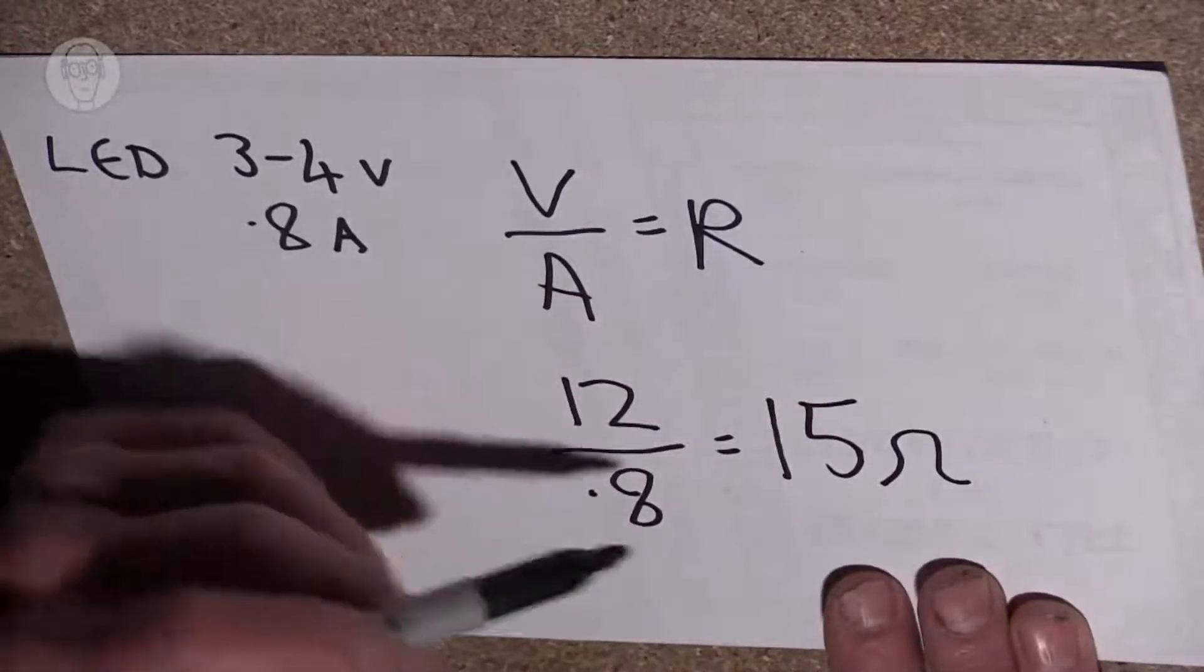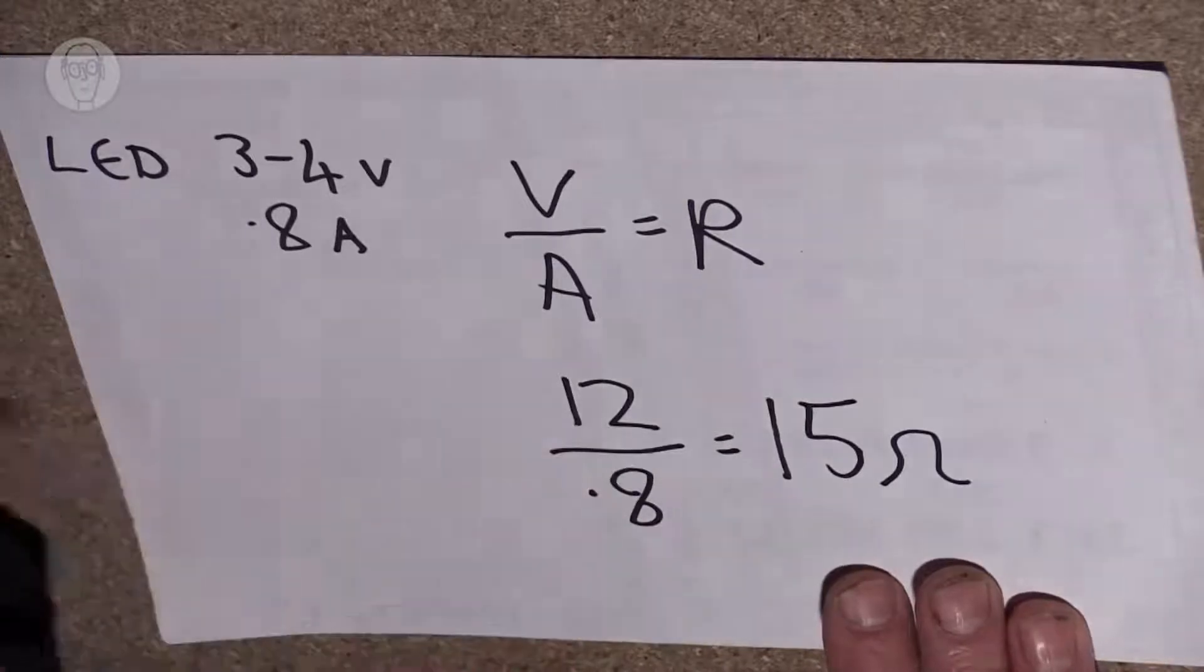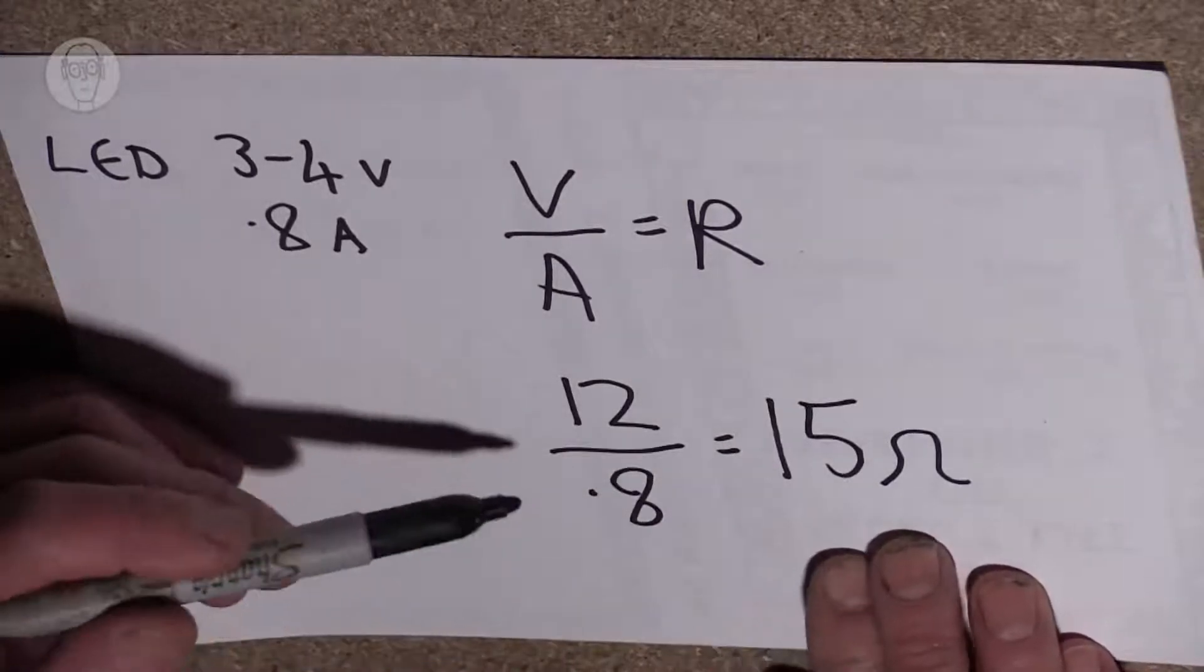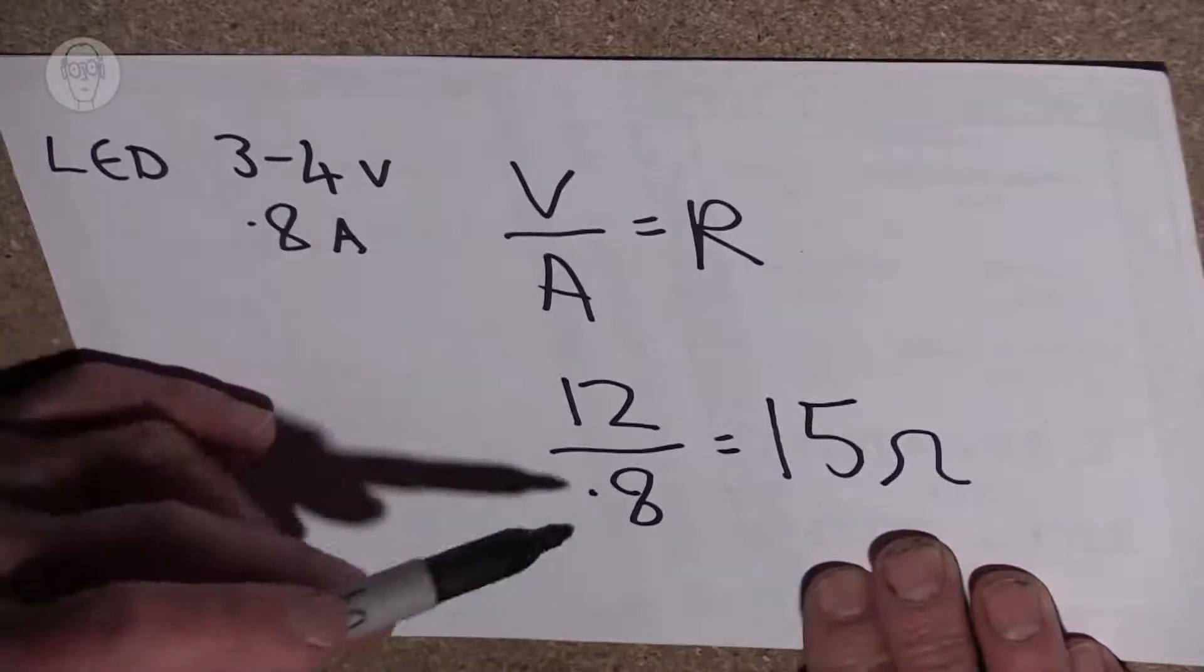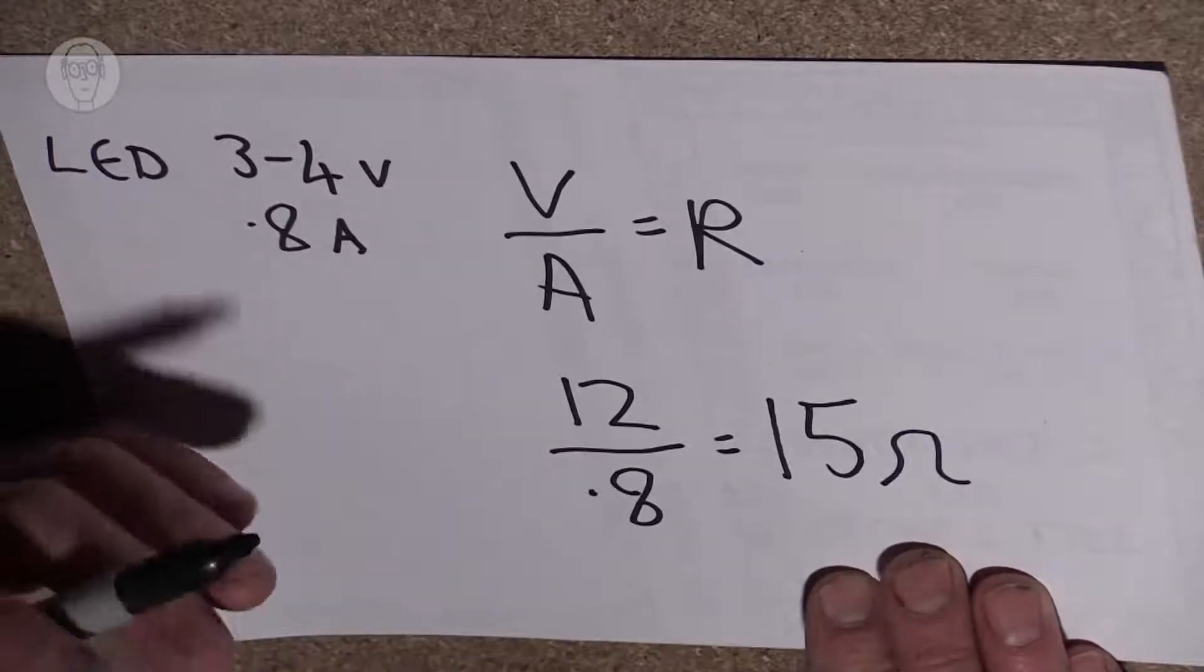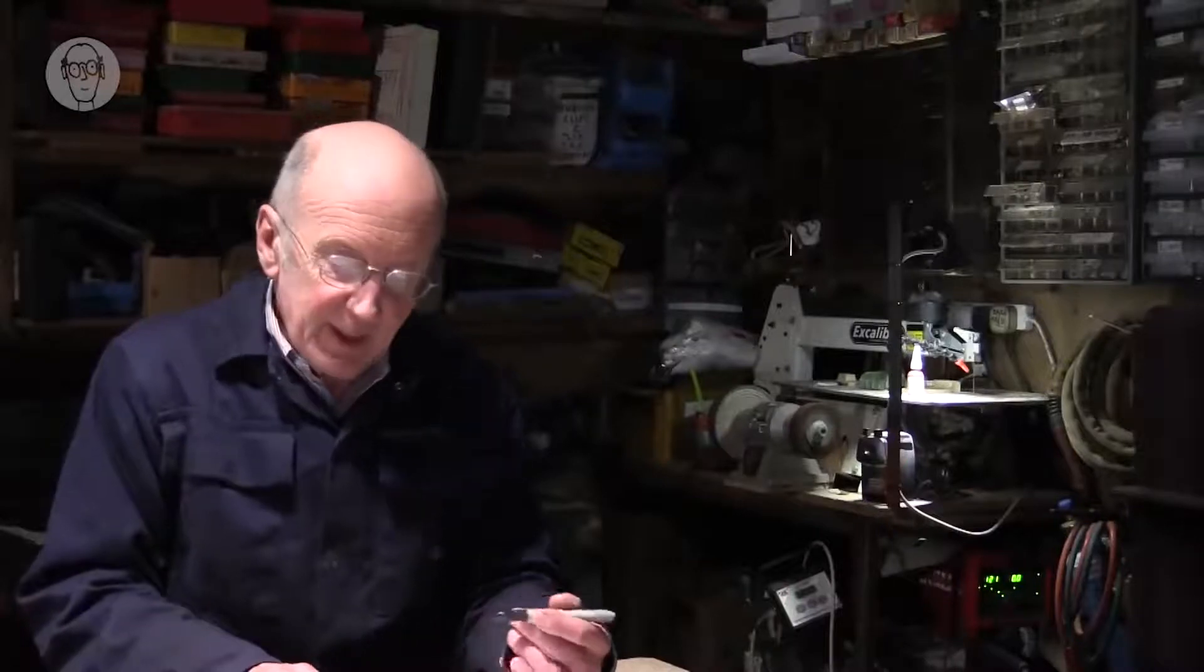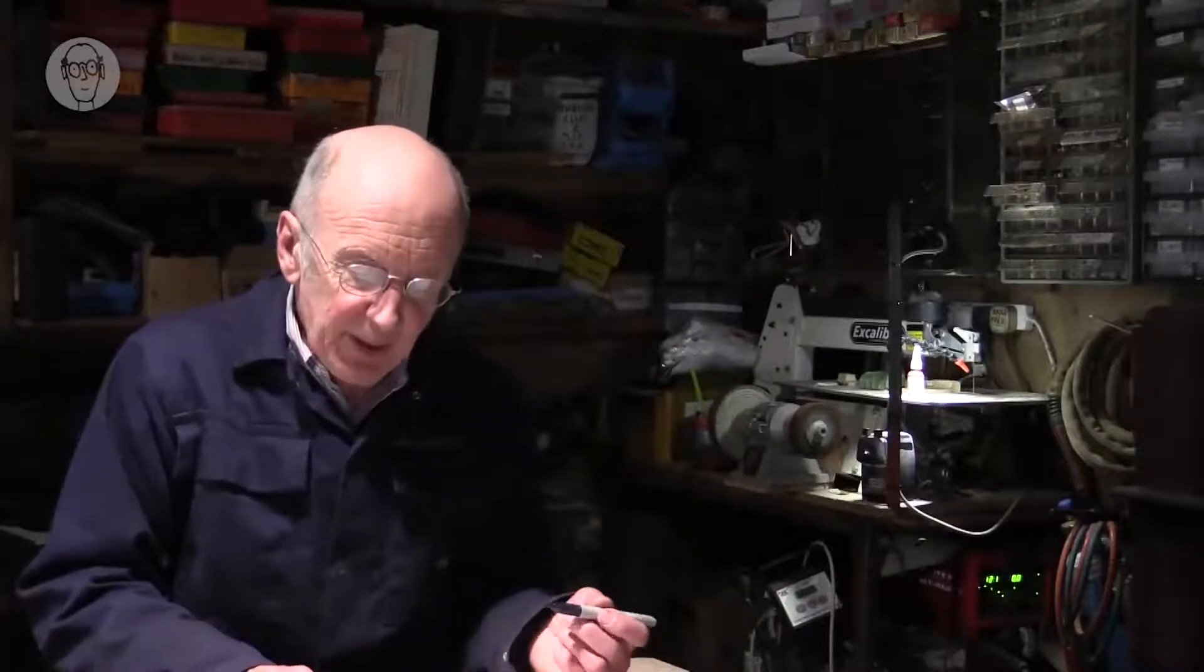If you put a 15 ohm resistor in the circuit, the current is never going to exceed 800 milliamps or 0.8 of an amp. The resistance of the LED will only add to the resistance of the circuit and lower the current.